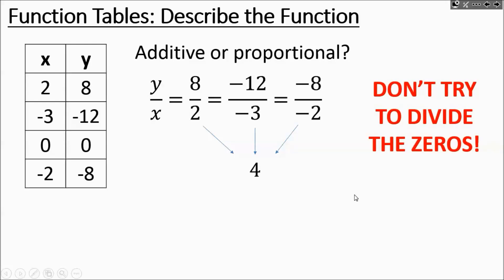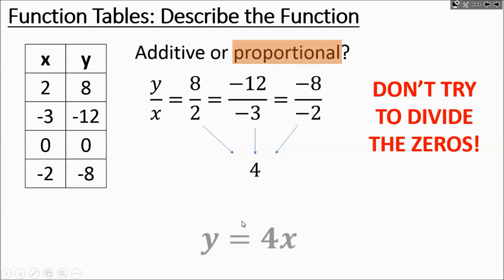When you have zeros in the table, you don't try to divide them out, but we'll double-check once we know the rule. According to our division, all pairs divide out to 4, which means we're multiplying the input by 4 — so it's proportional. The rule is y equals 4 times x.